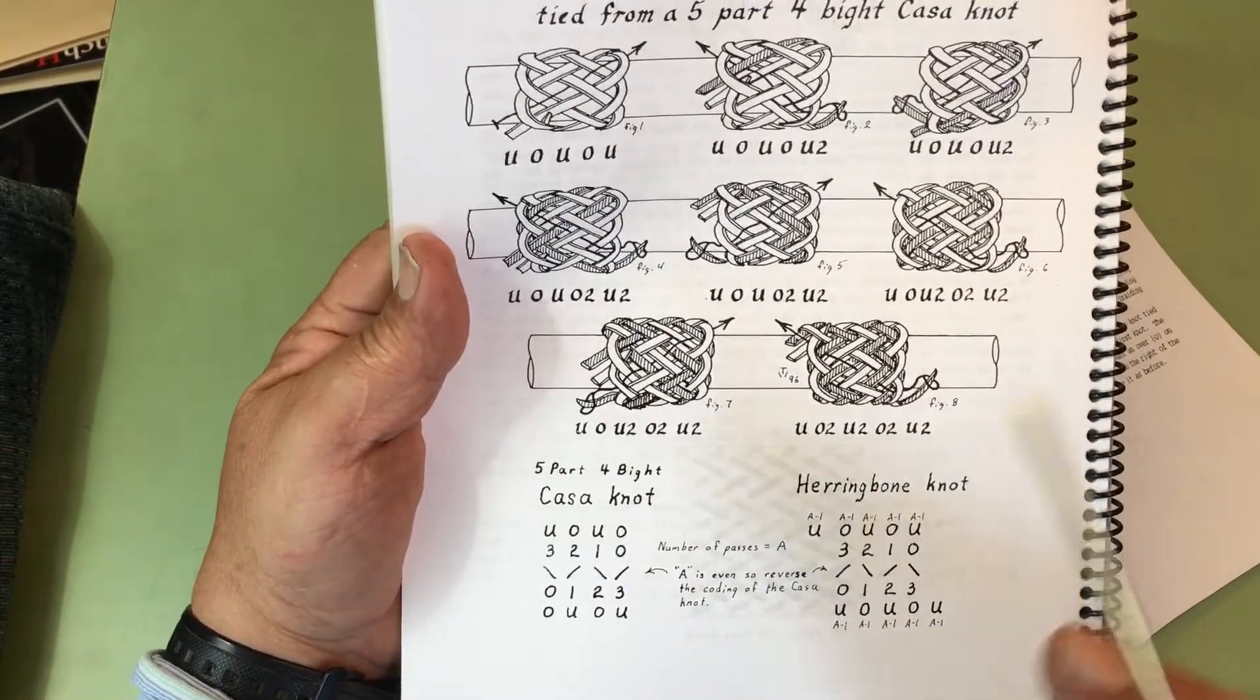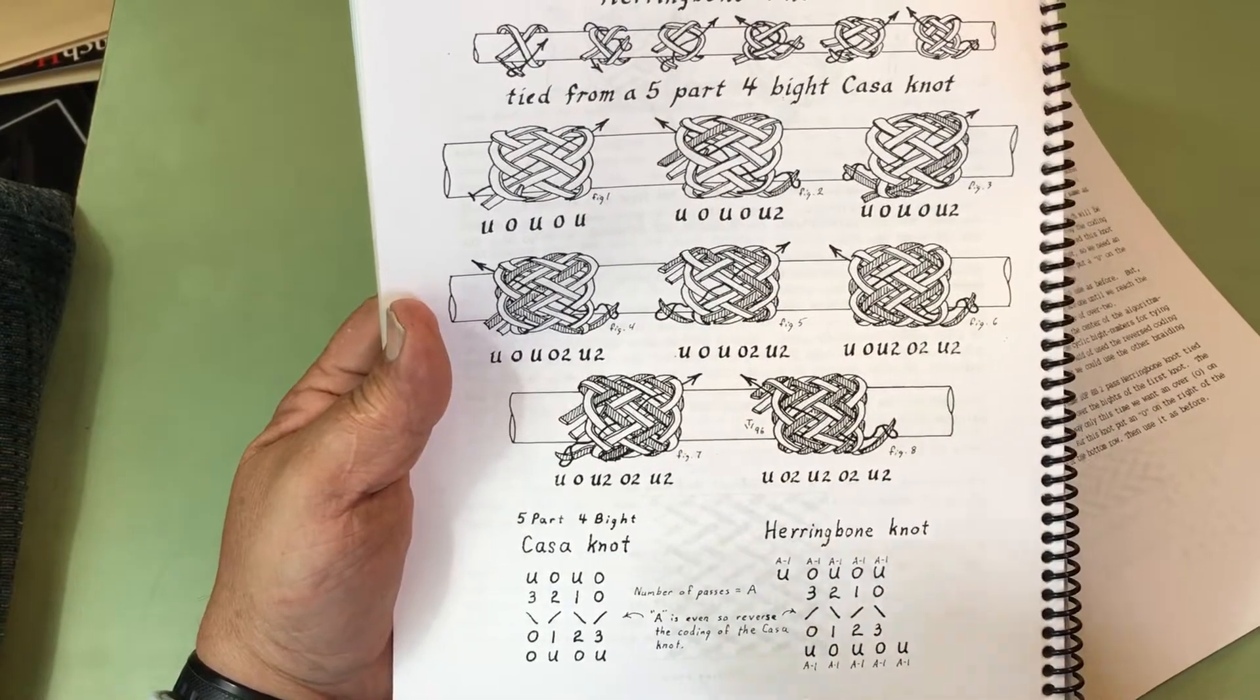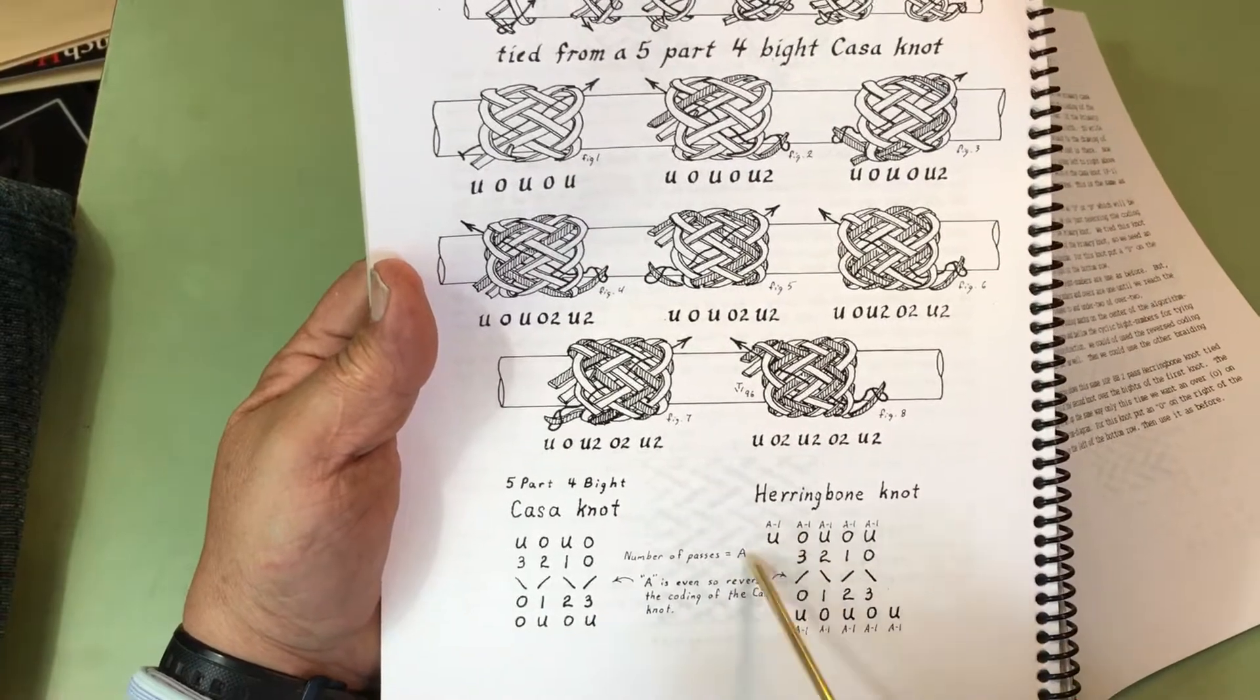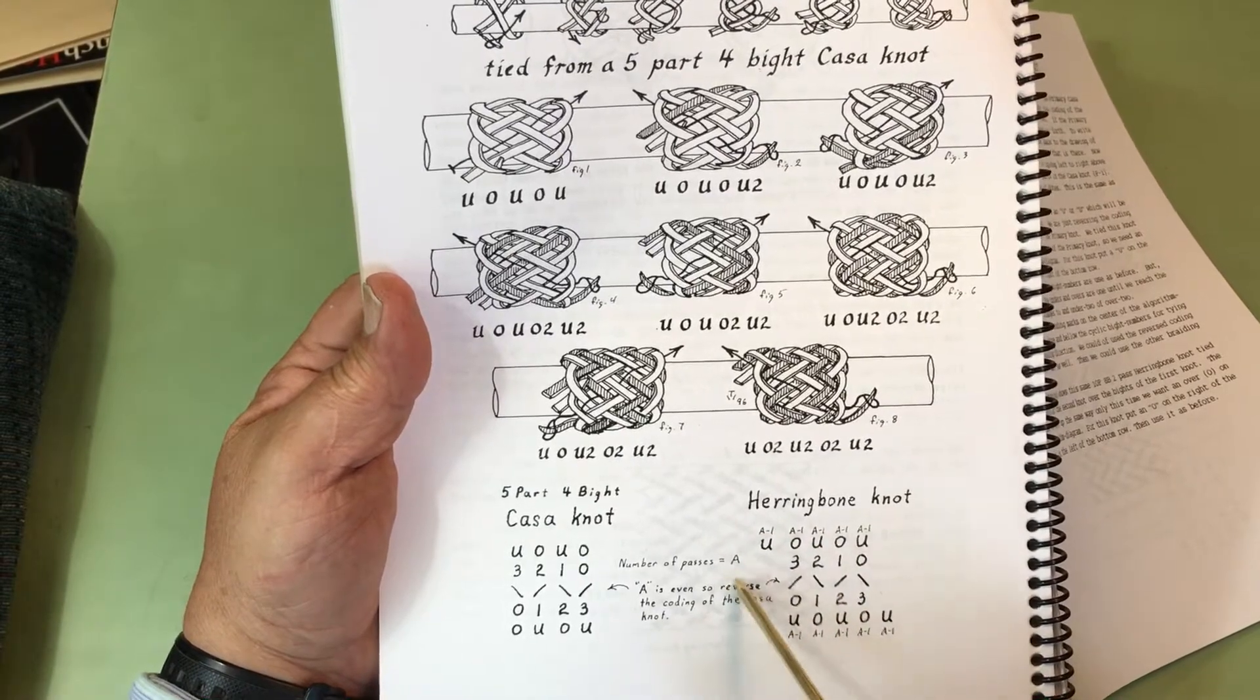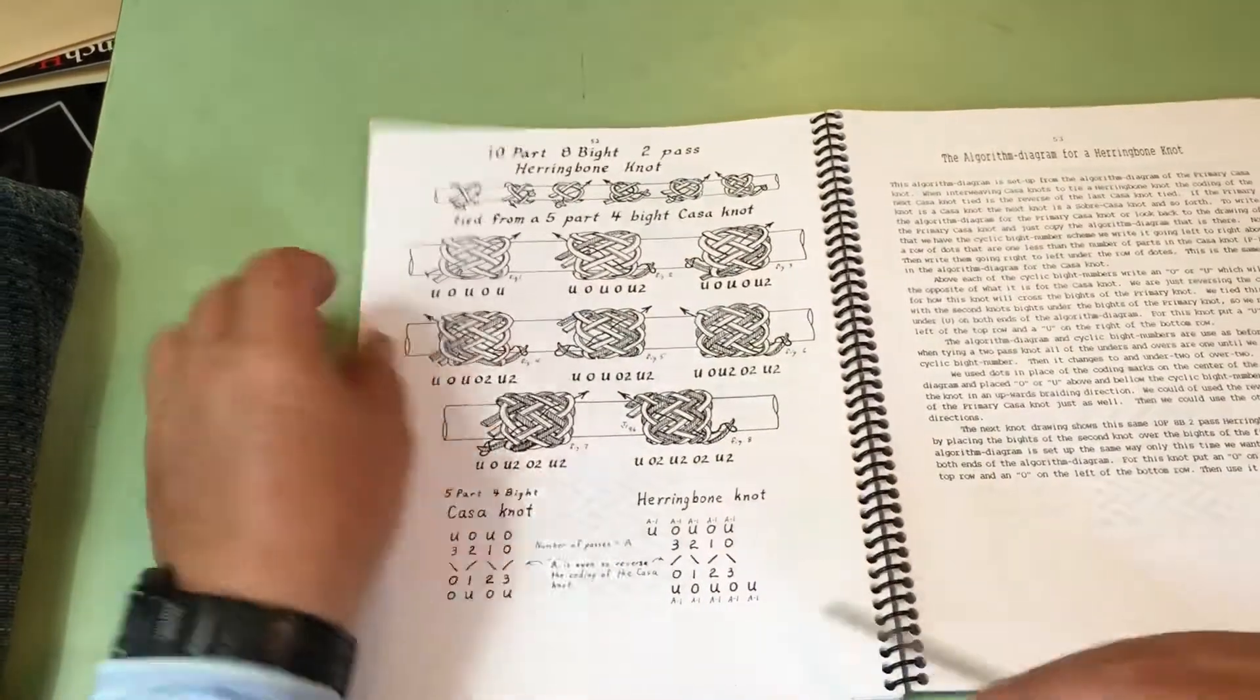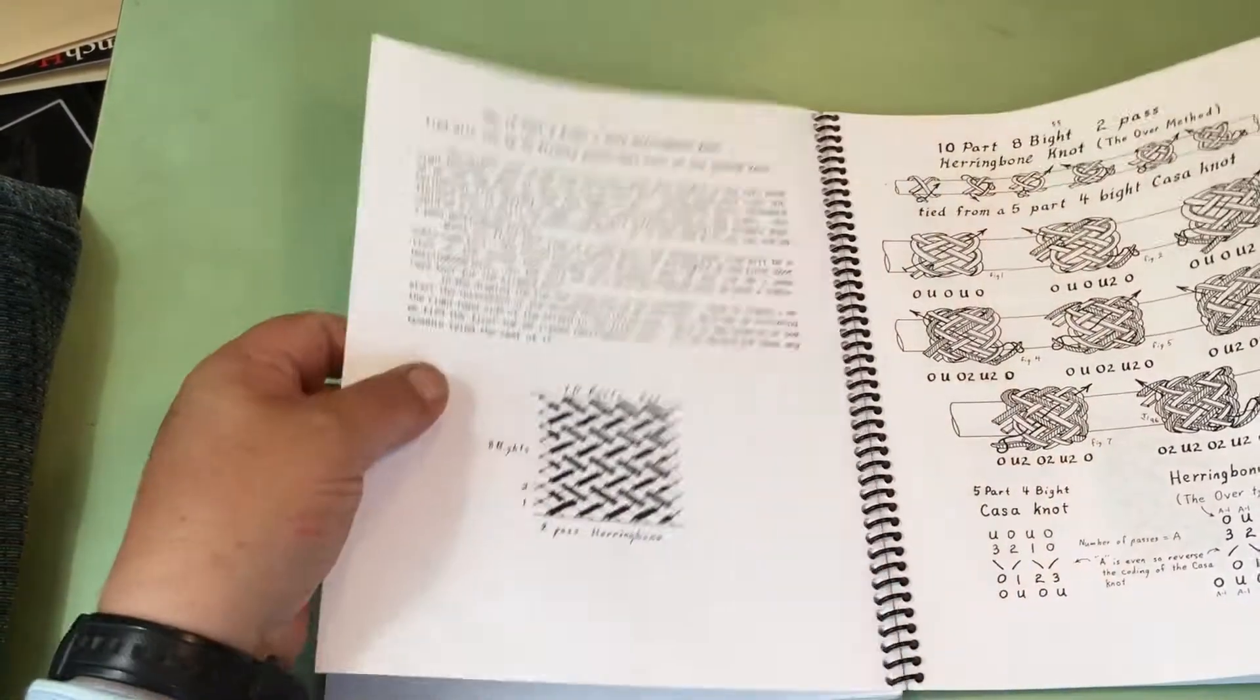But you have to, with a herringbone knot, the coating switches every other knot. So, you have to switch them. But see how you have an under out here on this end and an under out on this end? And then, you have A minus ones. The A is the number of passes. But it shows the setup of those.